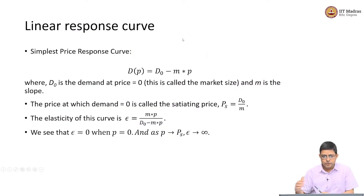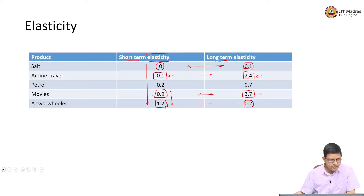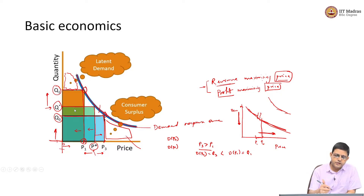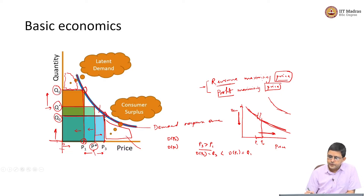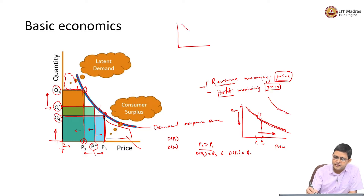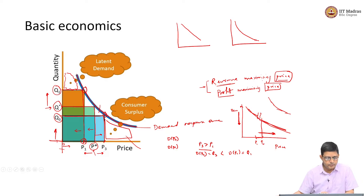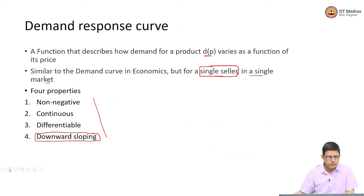Let us come to the different relationships between the price and demand. Should the blue curve be a straight downward sloping line, or should it be a non-linear downward sloping curve? How should the relationship be? That should also matter.